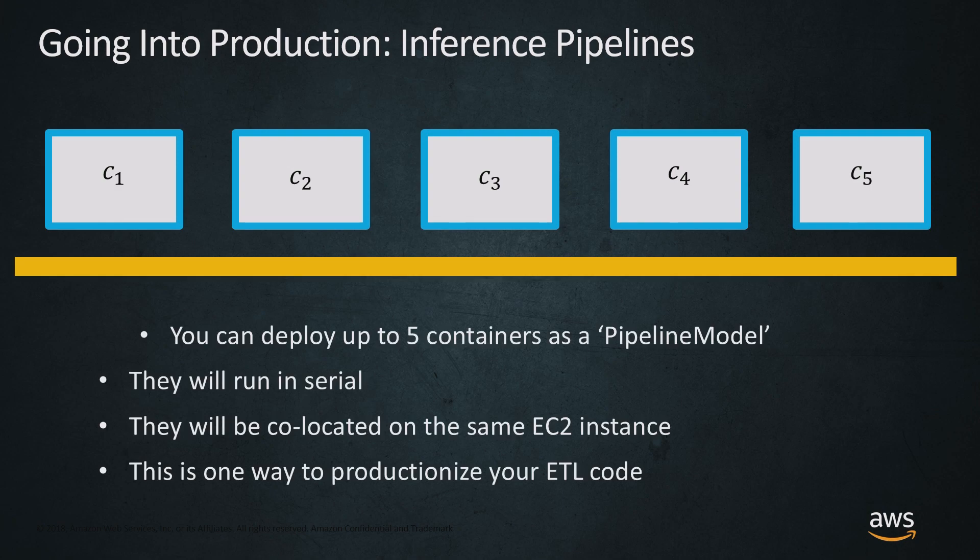One key topic here are inference pipelines, specific to SageMaker. Let's say I have not just one container but two, maybe more - maybe up to five containers and I want to run all of those in serial. Using inference pipelines in Amazon SageMaker, I can set this up. I can deploy up to five containers as a pipeline model. My process is going to run through container one - maybe doing some feature transformation - run through container two with PCA, container three is my XGBoost. Those containers will be co-located on the same EC2 instance.